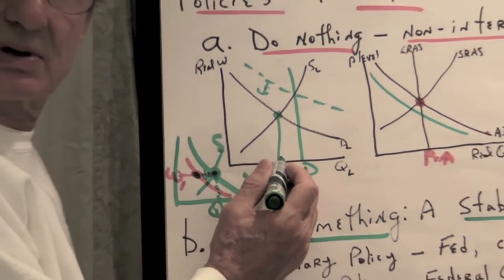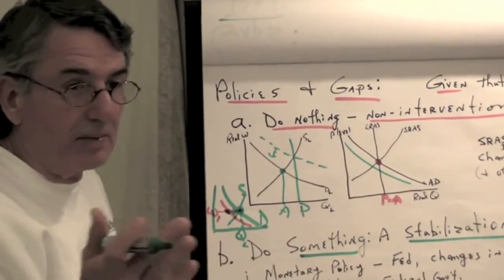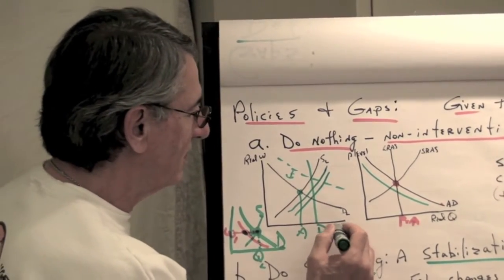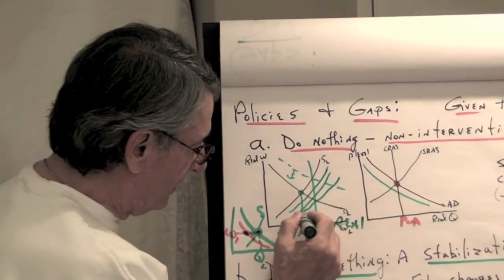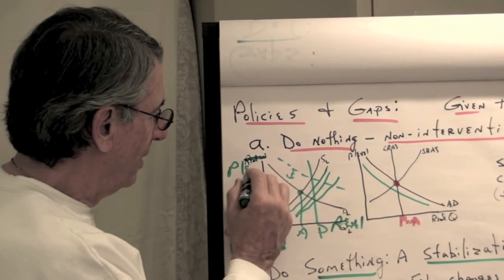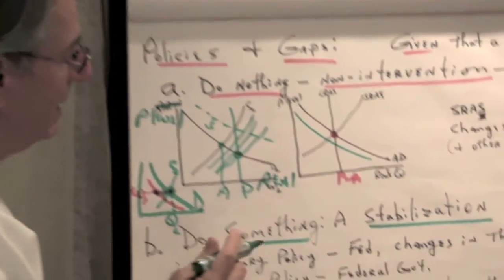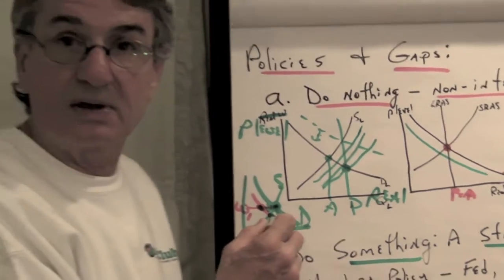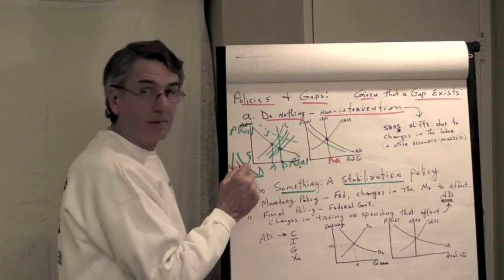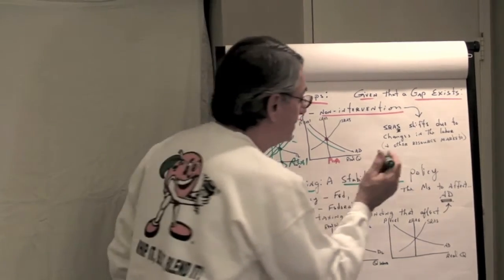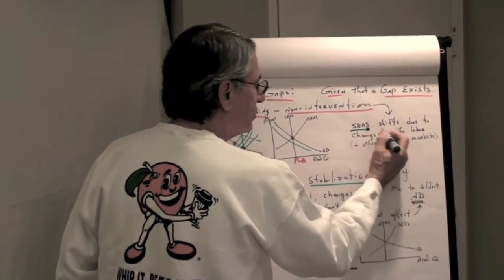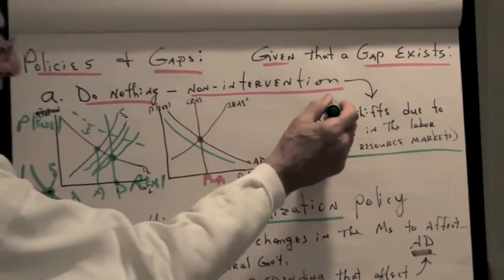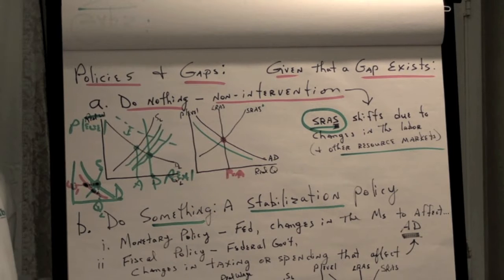As the price of labor and other resources starts to drop, time is an issue. I mean, it may go slowly, it may go quickly, but as the resource prices drop, this shifts the short-run aggregate supply curve to the right and causes the new equilibrium to be achieved at the potential level of output. And when the new equilibrium is achieved with real GDP, it means that the labor markets are in equilibrium again as well. So with non-intervention policy, the short-run aggregate supply shifts due to changes in the labor and other resource markets. A non-intervention policy acts on short-run aggregate supply to achieve the new equilibrium.